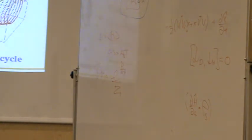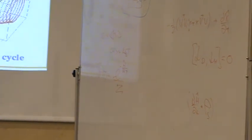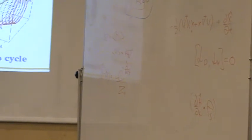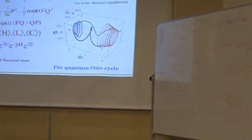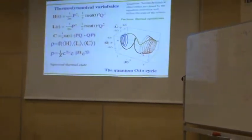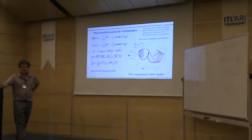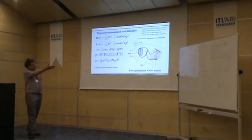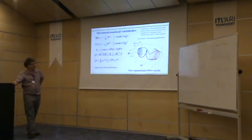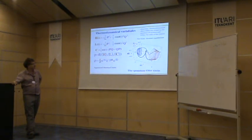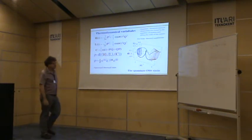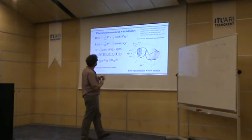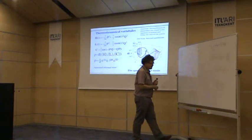So the question is: how many variables do I need? The minimum number of variables to describe the state of the harmonic oscillator. My claim is that these three operators — H, L, and C — are sufficient to describe the harmonic oscillator.